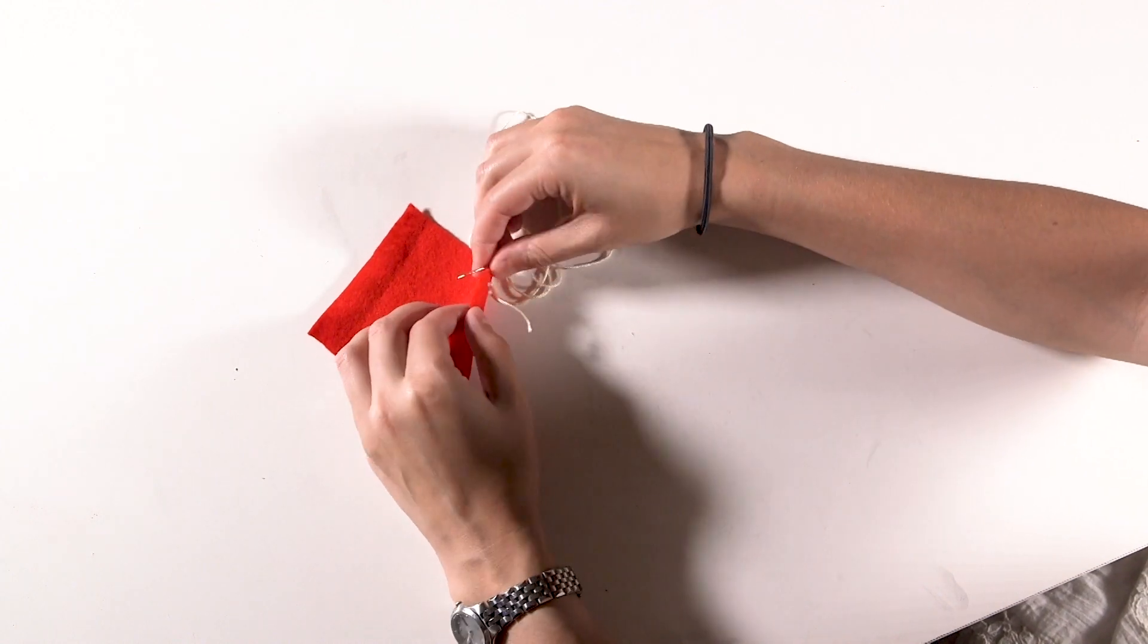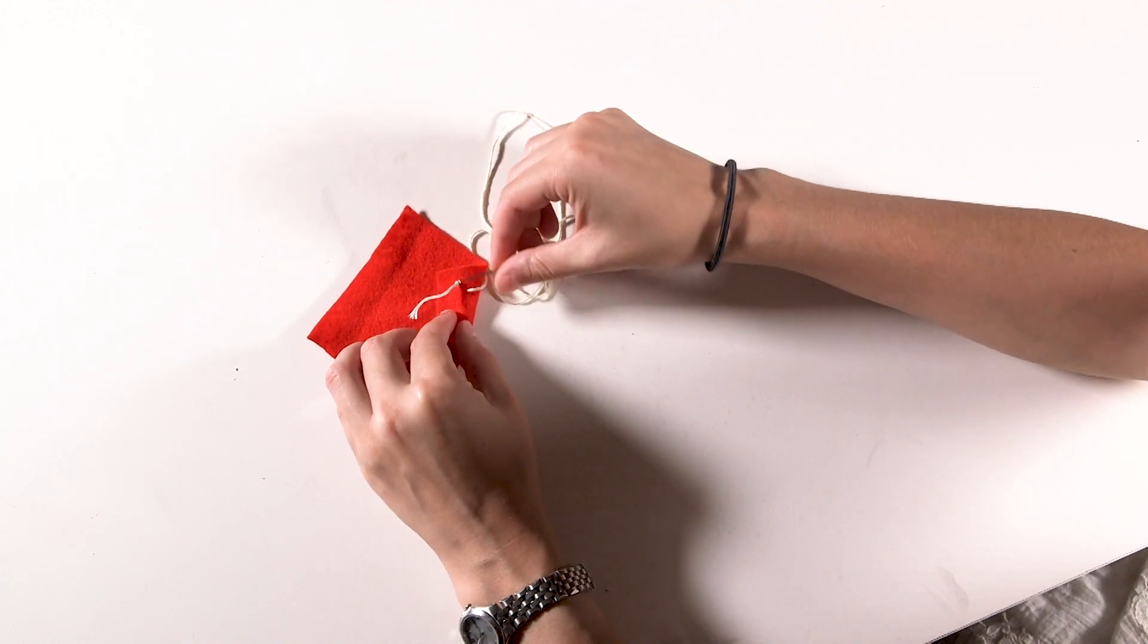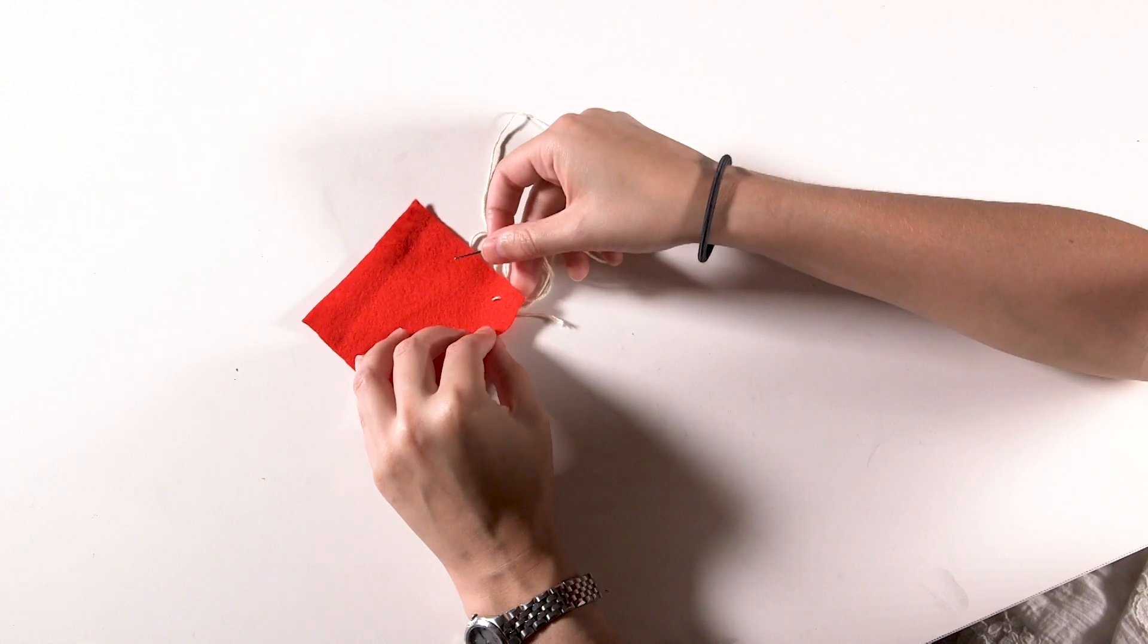Show the children how to prod the material slightly with a needle first, but without piercing it so they can see where the stitch will be going.